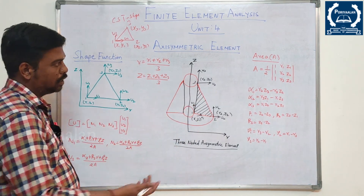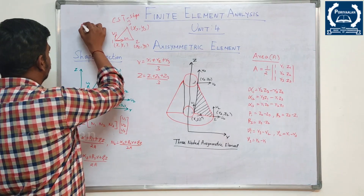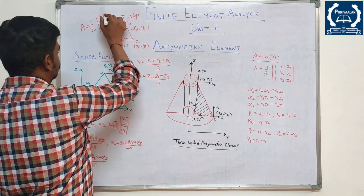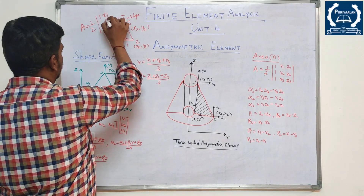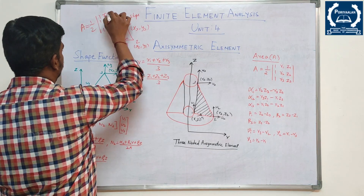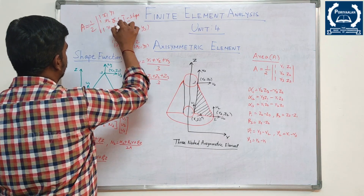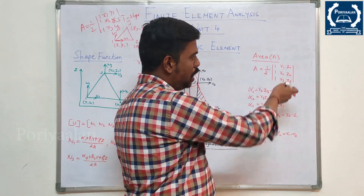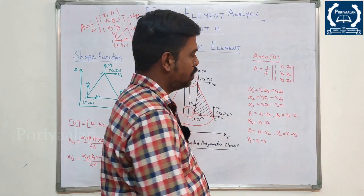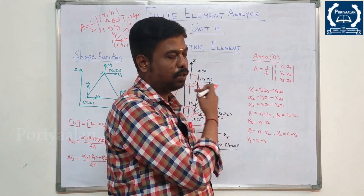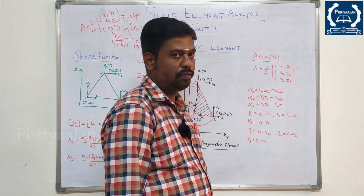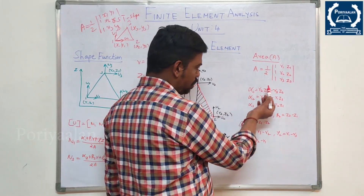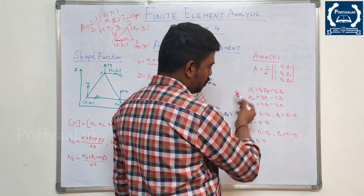The area formula for the CST element is: Area = (1/2) times the determinant with rows [1, X1, Y1], [1, X2, Y2], [1, X3, Y3]. This is the same formula for the Axisymmetric element — just replace X with R and Y with Z. That is the area formula for the Axisymmetric element too.